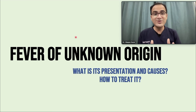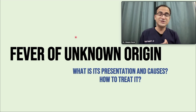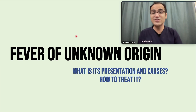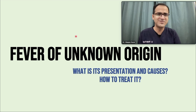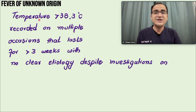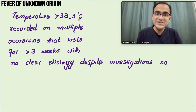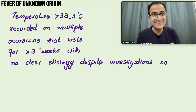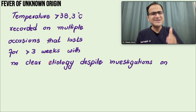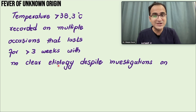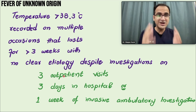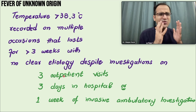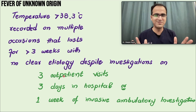In this video we are going to talk about fever of unknown origin — what it is, what the causes are, and how to manage and work up fever of unknown origin. First of all, fever of unknown origin is defined as a temperature greater than 38.3 degrees Celsius recorded on multiple occasions, lasting for greater than three weeks, with no clear etiology despite investigations.